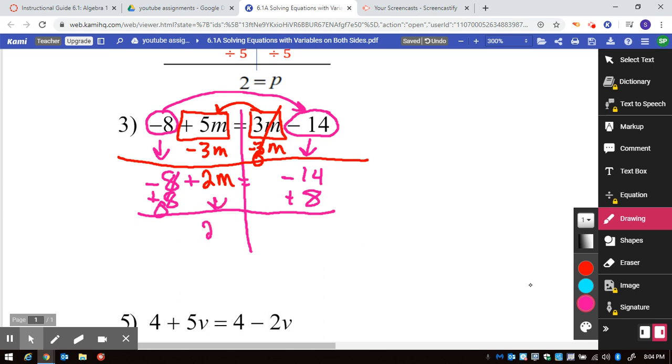So, drop the 2M, negative 14 plus 8 is negative 6. And now we are on to the final step. I only need the value of 1M. So, 2 divided by 2 makes 1M is equal to, what you do to one side, you have to do to the other. Negative 6 divided by 2 is negative 3.